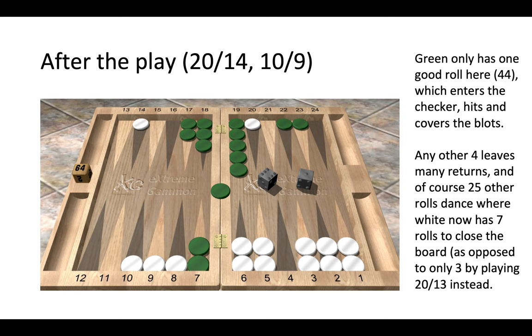There is another reason why this is a correct play, 20-14, 10-9. We want to complete a full closeout—we want to make our four point and play on for two. By splitting 10-9, we have more than doubled our opportunities to close our four point. We now have seven rolls to make our four point if green dances. If green enters, we can also make the four point on his head with those same seven numbers if he stays back.